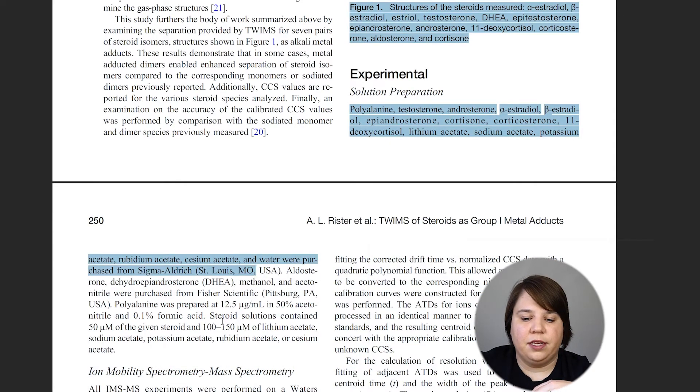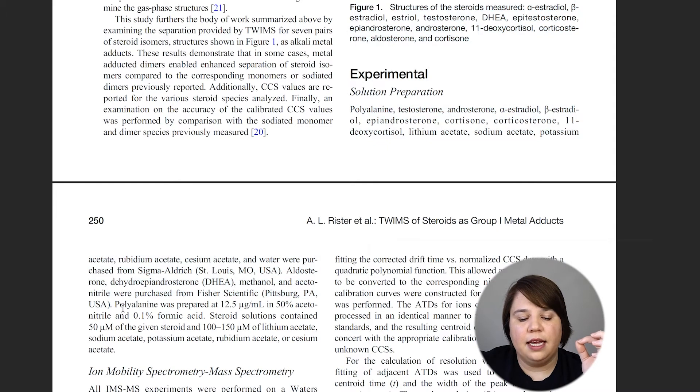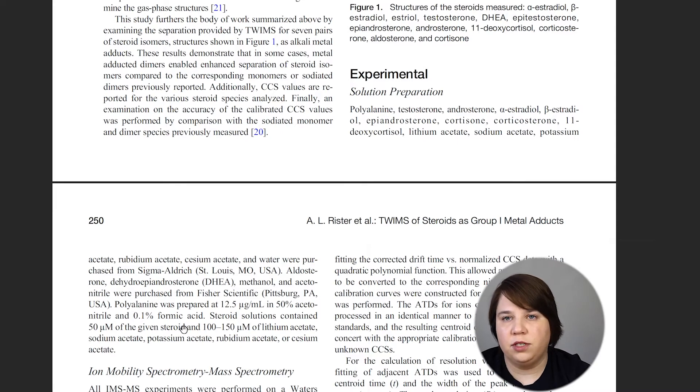So that would be the first thing I would do is remove these two sentences out completely. And then here, I would say to calibrate collision cross section values, polyalanine was prepared. So that now tells you why I'm creating this solution. And then I would say to analyze steroid ion mobility separation and collision cross section, the steroid solution. So that kind of gives you a little bit more context, rather than just saying polyalanine and steroid solutions, because you don't really know why I'm using those two things right now.